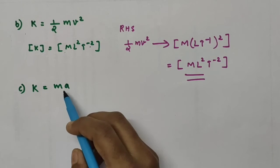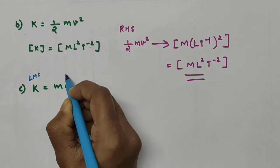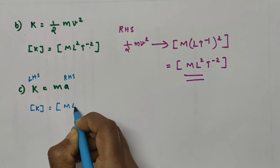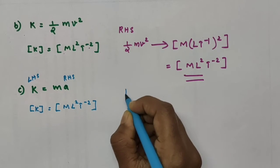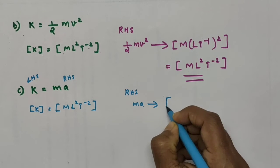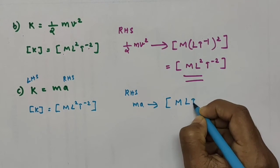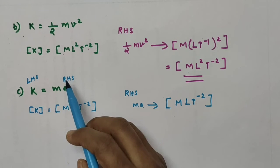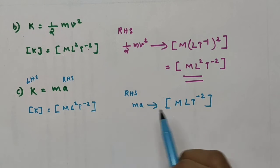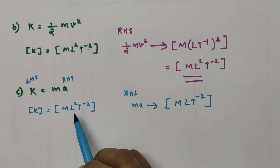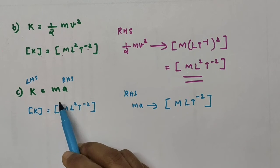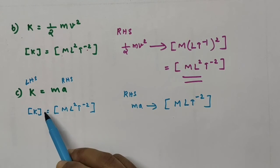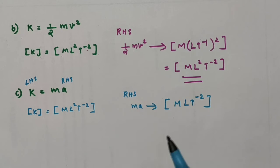The third equation is K equal to M times A. The dimensions of LHS (kinetic energy) are ML²T⁻². On the RHS, M times A: dimension of mass is M, and dimension of acceleration is MLT⁻². Comparing LHS (ML²T⁻²) with RHS (MLT⁻²), these two are not the same. So the equation K = MA is dimensionally incorrect — it is a wrong equation and can be ruled out.